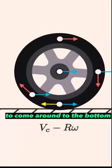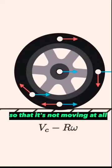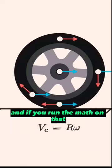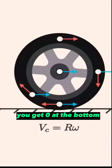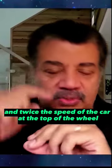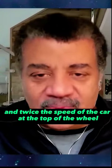To come around to the bottom, so that it's not moving at all. And if you run the math on that, you get zero at the bottom, the speed of the car in the middle of the wheel, and twice the speed of the car at the top of the wheel.